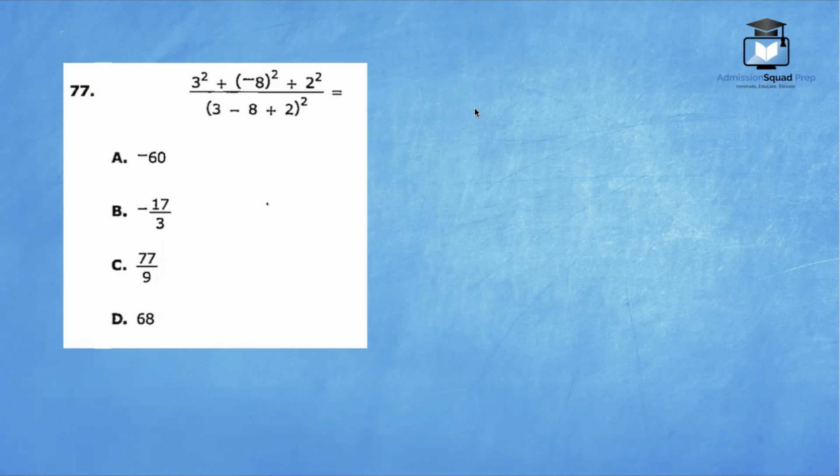Question number 77 is an arithmetic problem where we are going to use the order of operation. Remember our acronym GEMS. G stands for grouping symbols, E stands for exponents and radicals, M is multiplication and division from left to right, and S is subtraction and addition from left to right. Let's start off with our grouping symbols.